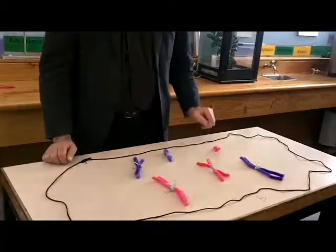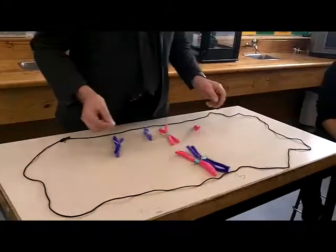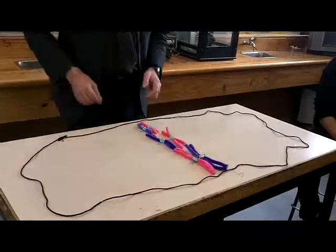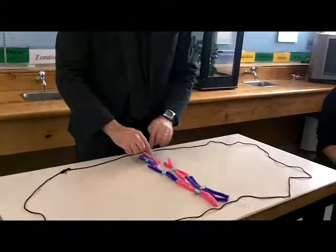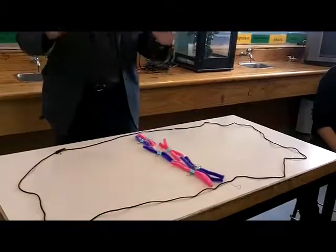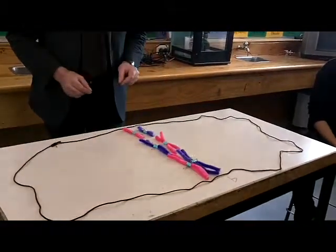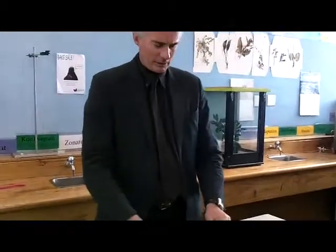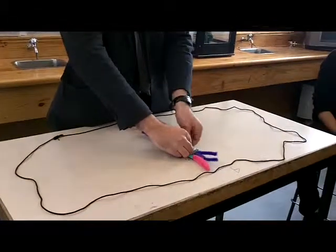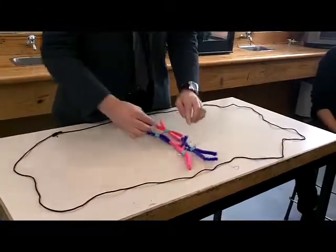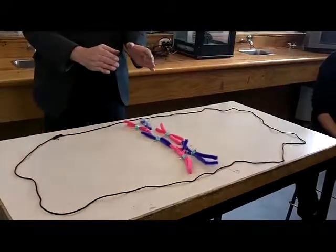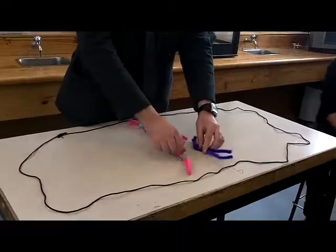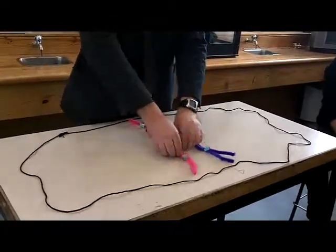Stage two: the homologous pairs of duplicated chromosomes start to line up in the equator of the cell. The arrangement of maternal and paternal chromosomes is completely random — we don't know which side any particular chromosome is going to be on. It's at this stage that we can get crossover, where the arms of chromosomes become entwined as they line up in the centre. Whole sections of chromosomes can swap from one chromosome to another, making new combinations of maternal and paternal genes.